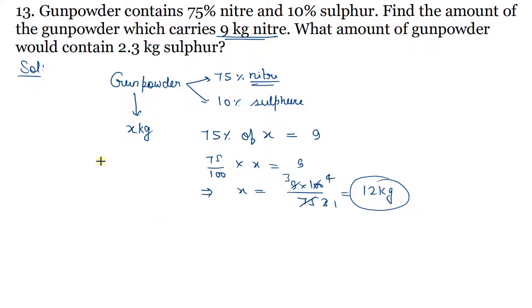Second question: what amount of gunpowder would contain 2.3 kg sulfur? So how much gunpowder contains 2.3 kg sulfur?